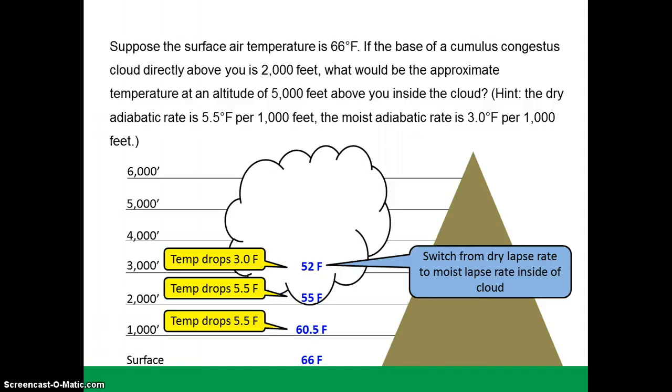Going up inside the cloud while we are saturated, the temperature now drops 3 degrees Fahrenheit for every 1,000 feet, bringing our parcel temperature to 52 degrees Fahrenheit at the 3,000 foot above ground level mark. Going up yet again another 1,000 feet, we drop 3 more degrees Fahrenheit at the moist adiabatic lapse rate and our new temperature is 49 degrees Fahrenheit.